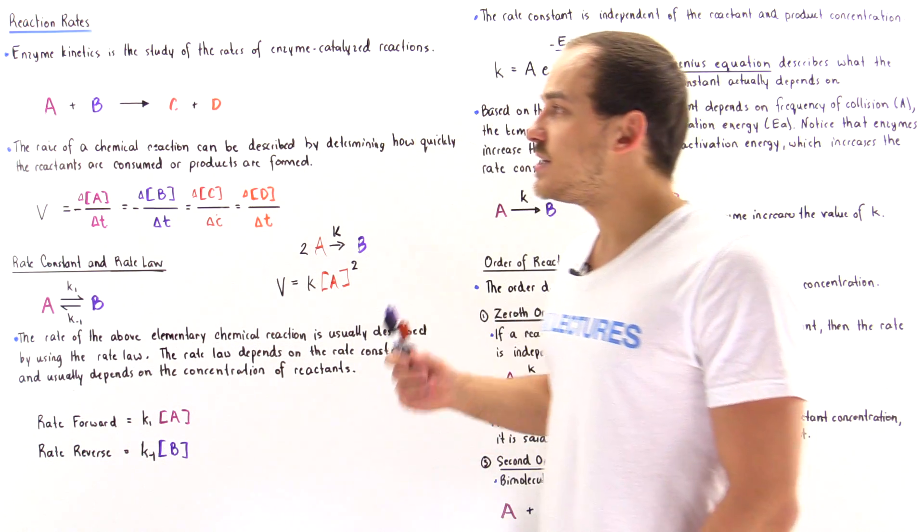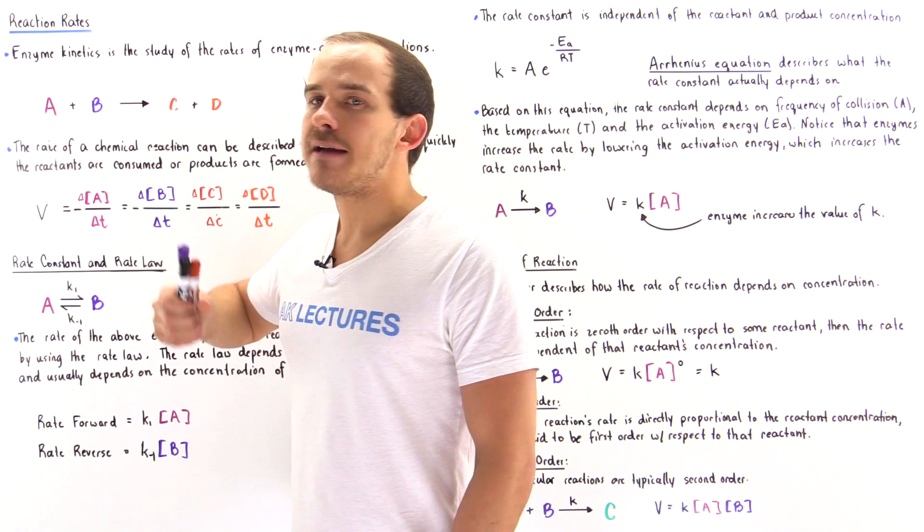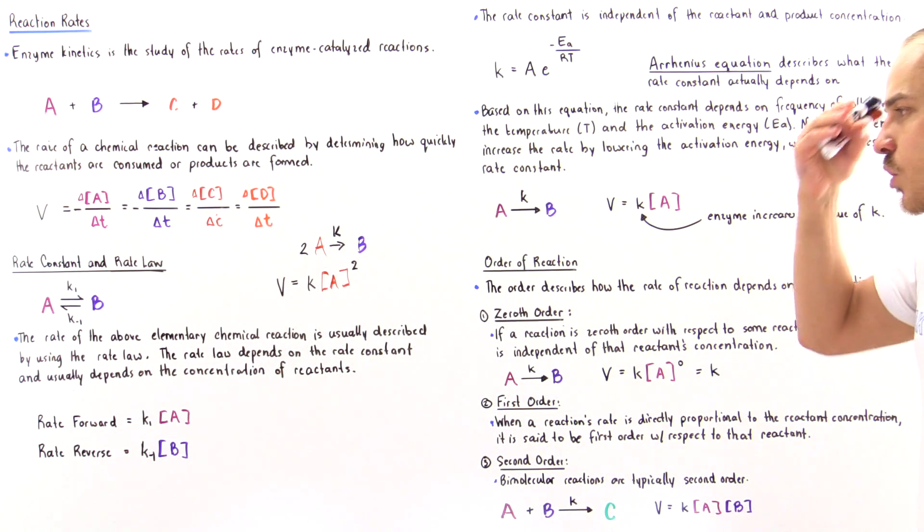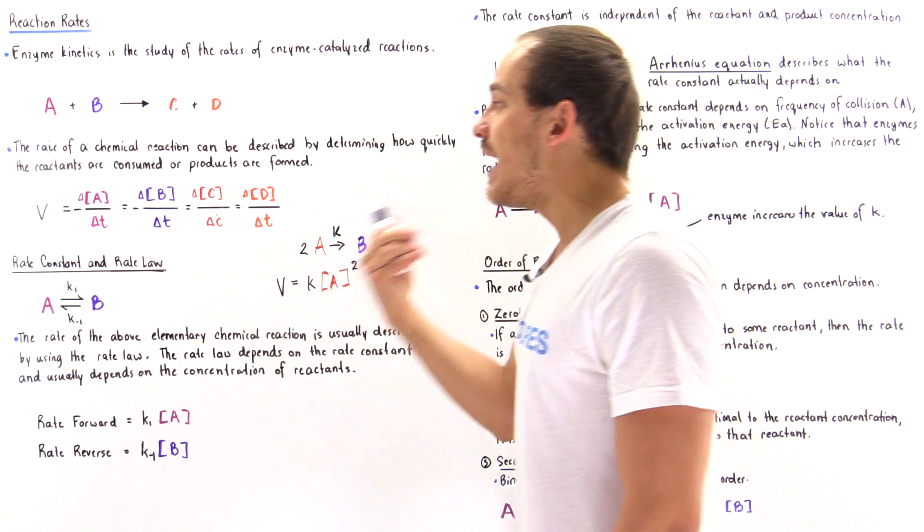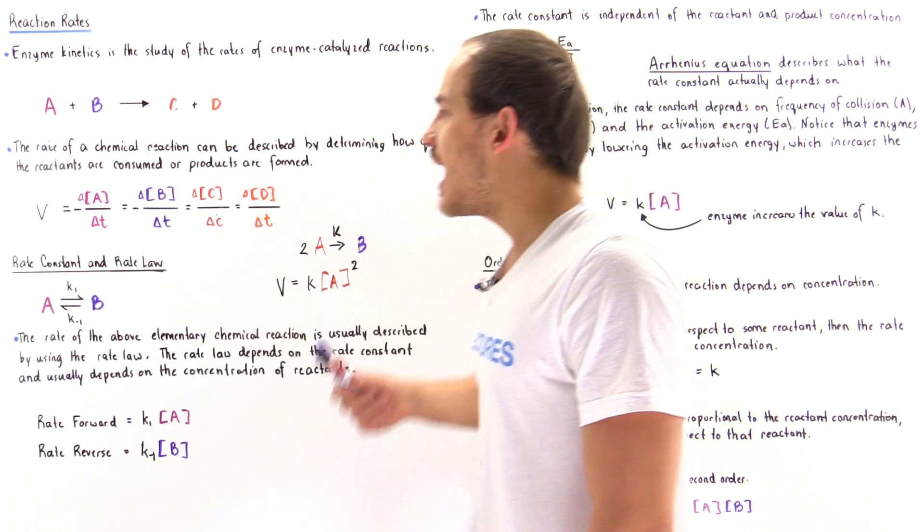So in the next lecture we're going to begin our discussion on enzyme kinetics. The main important point in this lecture was to realize how enzymes actually affect the rate law and the rate constant.